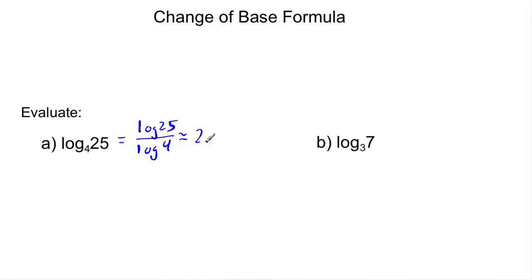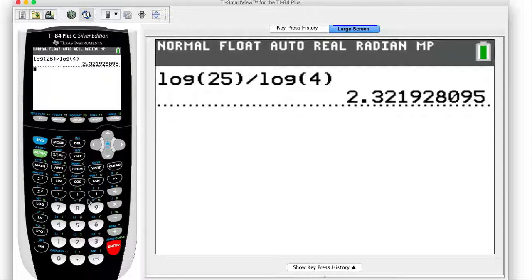So for my answer here, this is about 2.32. Now, I said that base doesn't matter. So what if I did base e? Natural log of 25 divided by natural log of 4.